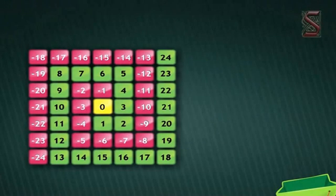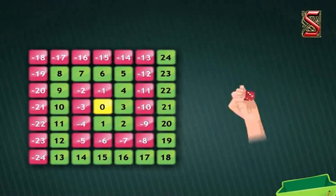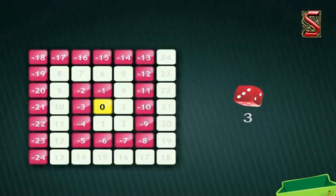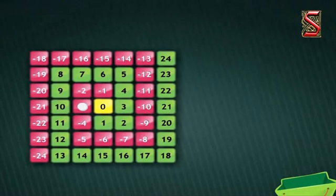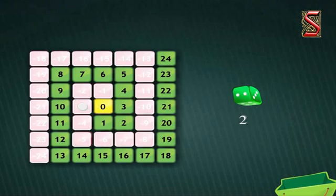Sita and Geeta started playing the game immediately. Sita takes out the red dice and rolls three. As the red dice indicates a negative number, Sita moves back three steps from zero and reaches negative three. Now it is Geeta's turn. She takes out the green dice and rolls it. She has got two. As the green dice indicates a positive number, she moves two steps forward from zero and reaches two.